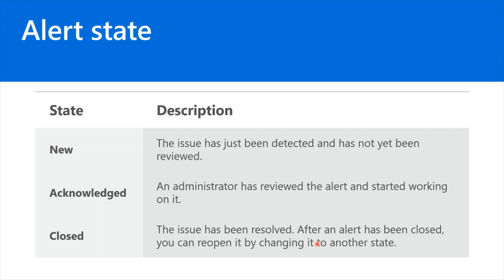There are three alert states. You can set the state of an alert to specify where it is in the resolution process. When the criteria in the alert rule is met, an alert is created or fired with a status of New. You can change the status to Acknowledged or Closed — all state changes are stored in the alert history. Alert state is independent of monitor condition: alert state is set by the user, while monitor condition is set by the system. When an alert fires, the monitor condition is set to Fired; when the underlying condition clears, it is set to Resolved, but the alert state remains unchanged until the user changes it.